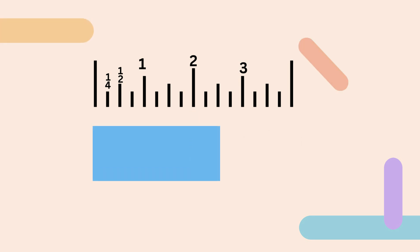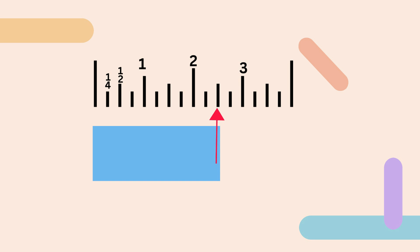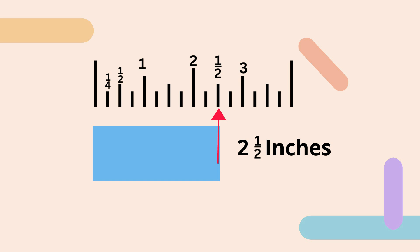With this one, let's begin at zero. It goes past the one and the two, and notice that it goes to the one-half mark. Notice that the one-half mark is a little bit larger — that's not always the case, but with many rulers that's what you will see. So this measurement is two and a half inches.